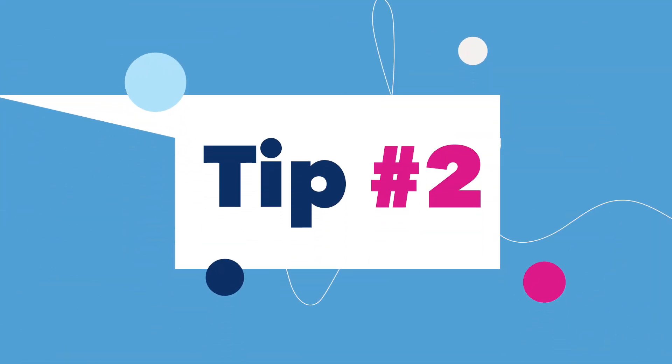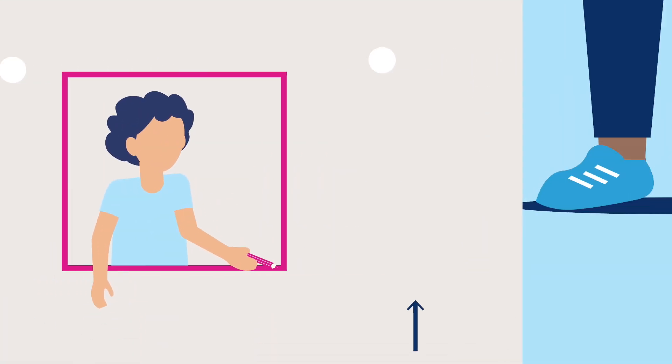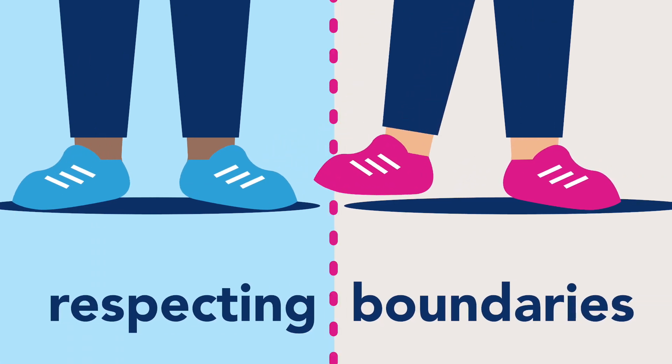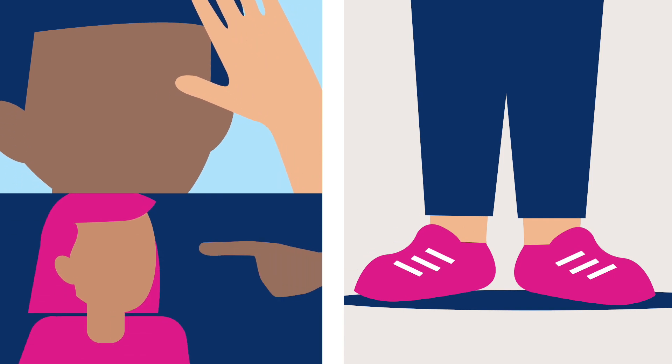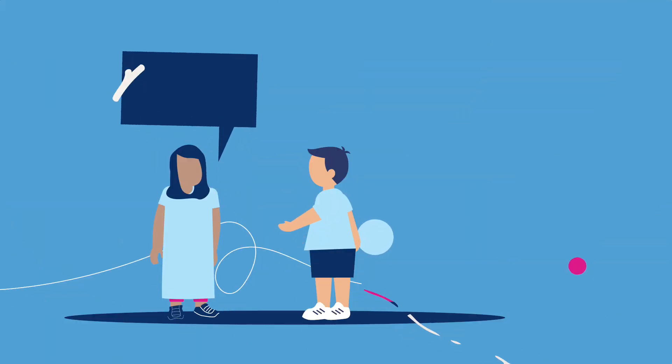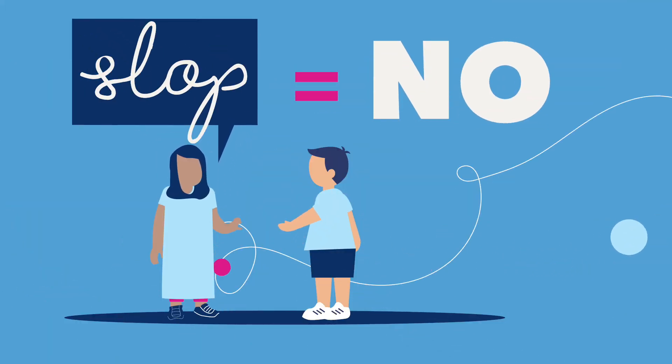Tip number two: teach your kid about setting and respecting boundaries. Teach them to ask before they touch someone else's body, face, or hair. Help them remember that no means no and stop means stop.